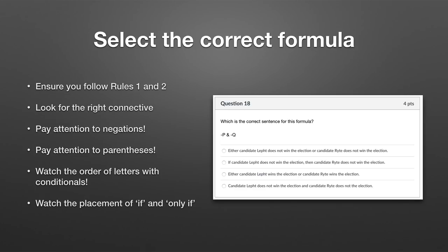Now we have a complex formula with complex propositions — a conjunction of negations. The first sentence option uses 'either...or,' which is a disjunction — not it. The second uses 'if...then,' a conditional — not it. The third uses 'either...or' again — not it. The last one: 'candidate left does not win the election and candidate right does not win the election' — that's a conjunction of negations, which matches. Make sure you pay attention to negations and match the connectives for disjunction, conjunction, and conditional correctly.